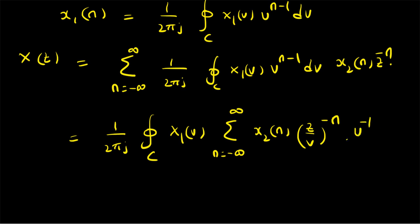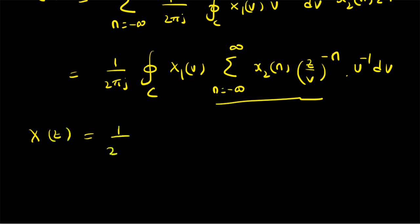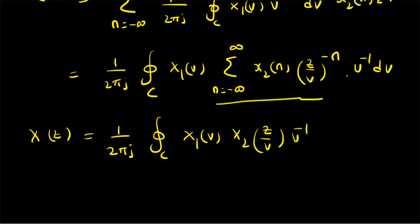We have v to the power −1 and dv. Now the summation — summation from n = −∞ to +∞ of x2(n) · (z/v) to the power −n — is basically the Z transform of x2(n) evaluated at z/v instead of z. So X(z) equals (1/2πj) times the closed contour integral over C of X1(v) · X2(z/v) · v to the power −1 dv. That is the definition and proof of the Z transform of the multiplication of two sequences.